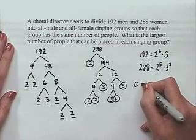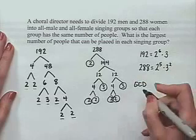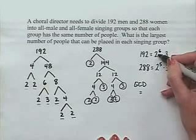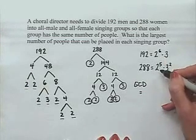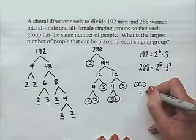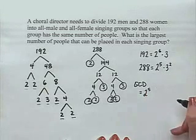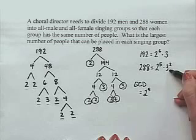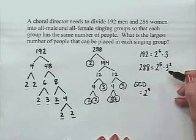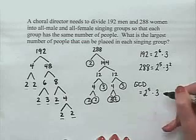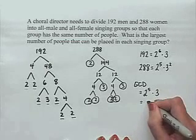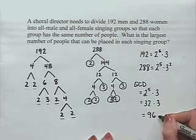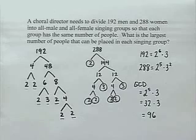Now we're looking for the greatest common divisor. We have 2 to the 6th for 192 and 2 to the 5th for 288; we take the smaller exponent, so 2 to the 5th. We have 3 to the 1st in 192 and 3 squared in 288; we take the smaller, which is 3 to the 1st. The GCD is 2 to the 5th times 3, which equals 32 times 3 equals 96. Therefore, the largest number of people that can be placed in each singing group is 96.